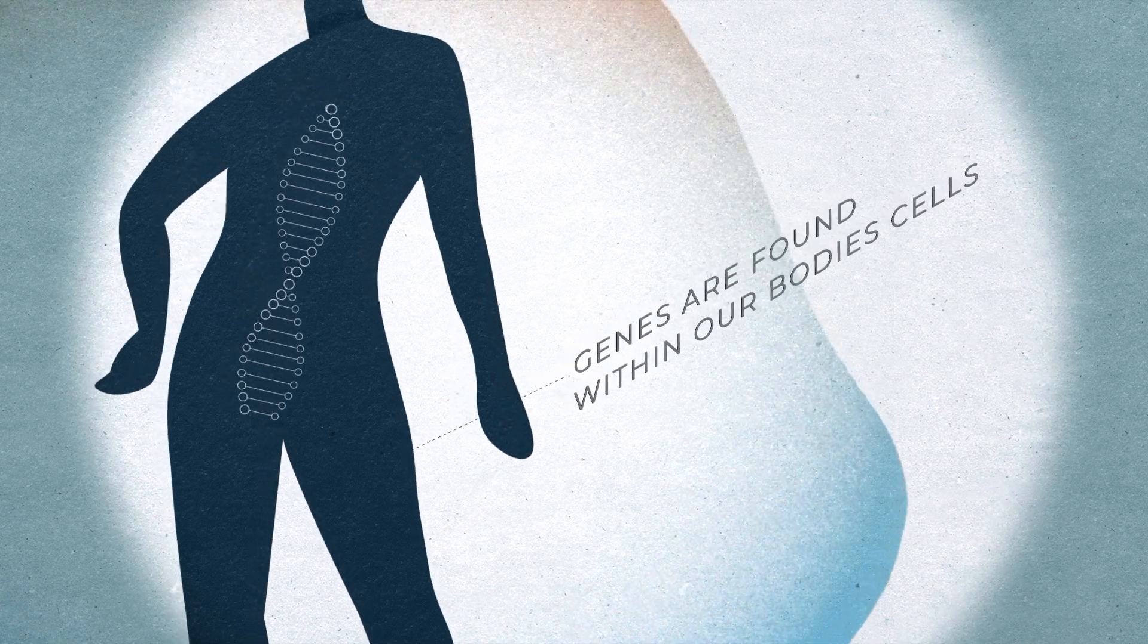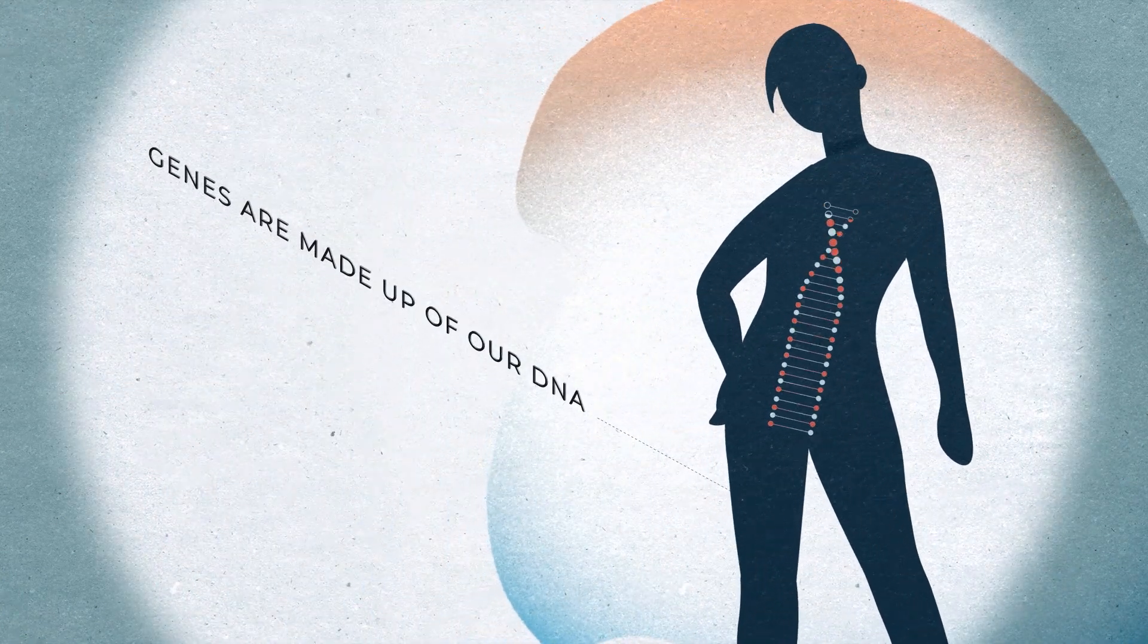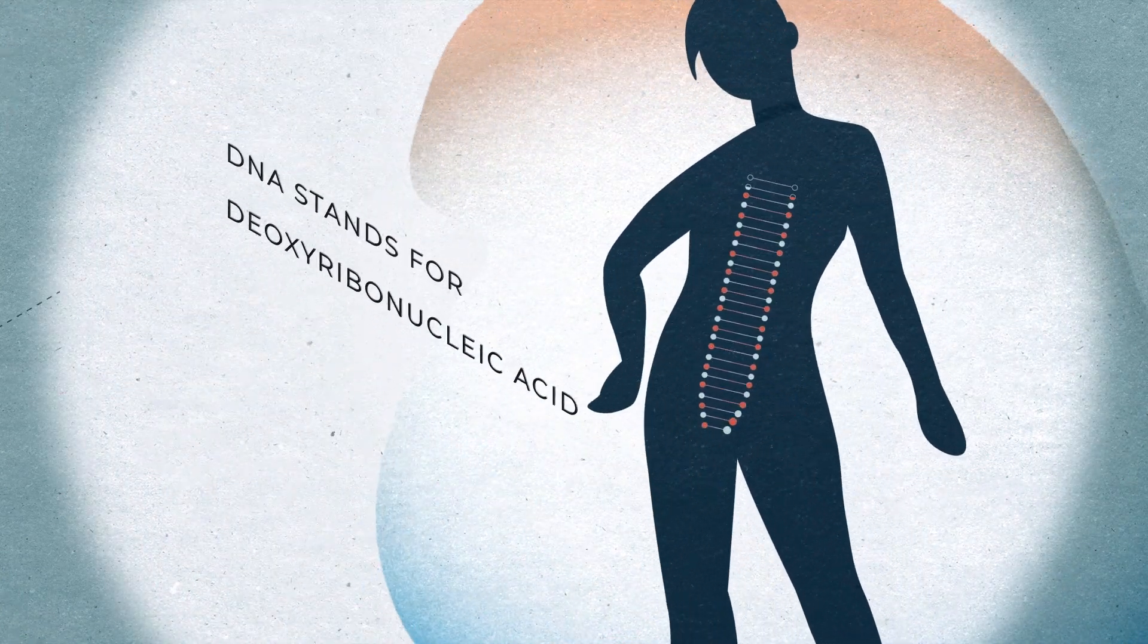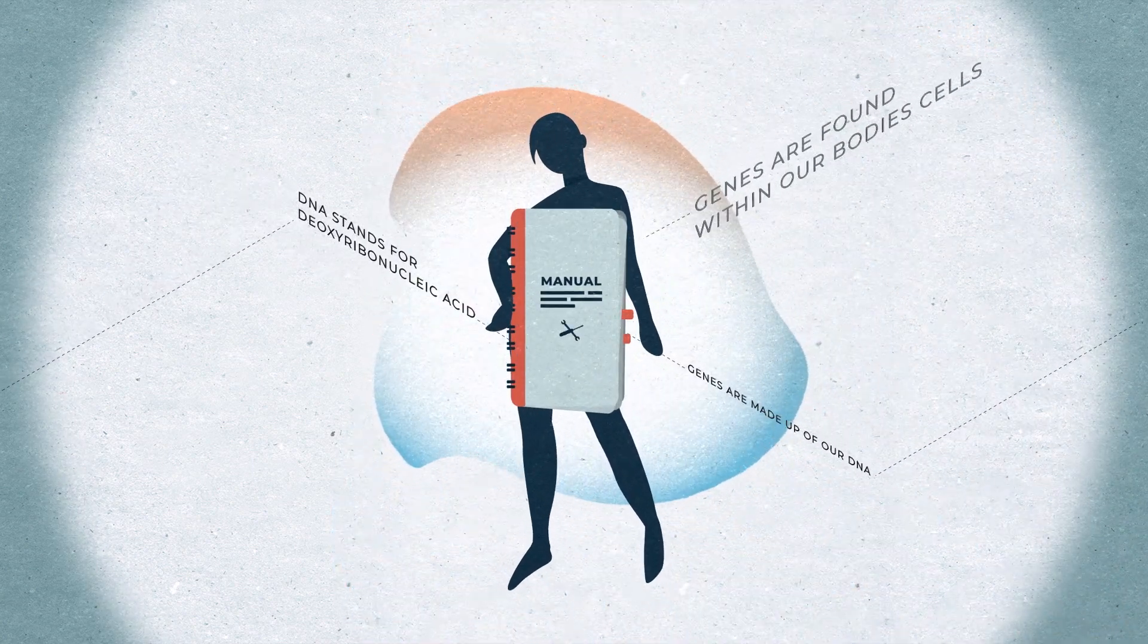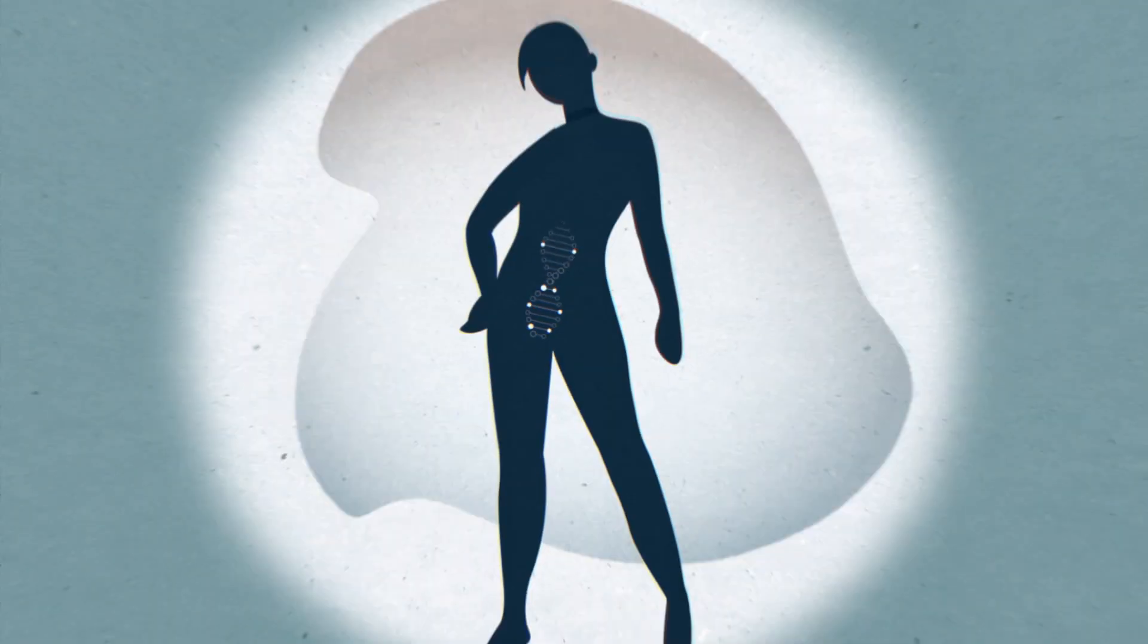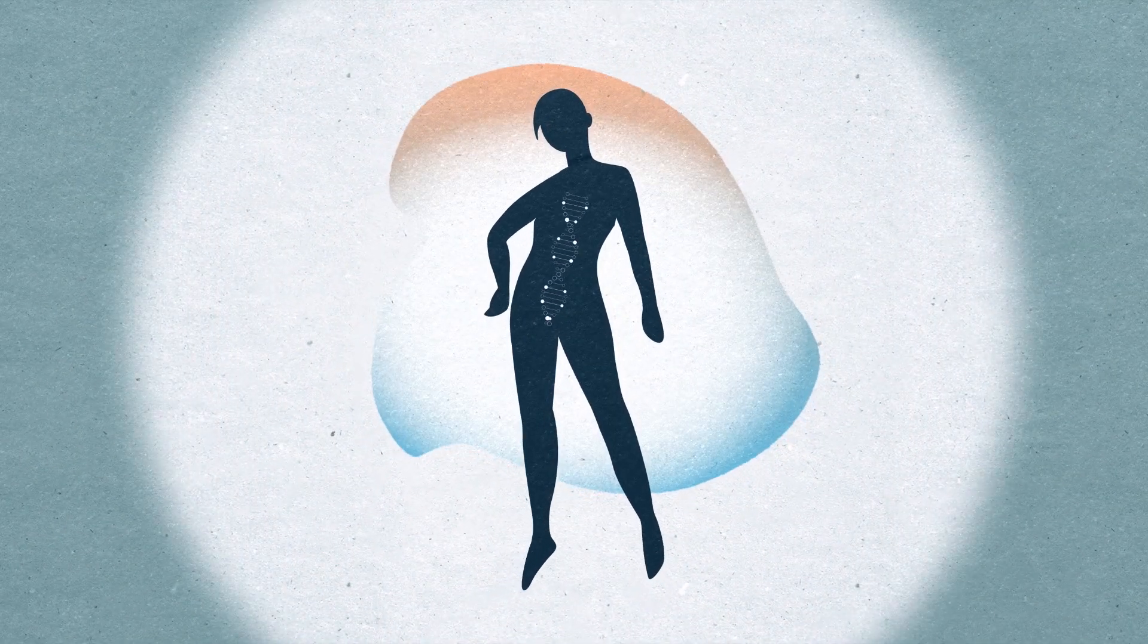Genes are found within our body's cells and they're made up of our DNA. DNA stands for deoxyribonucleic acid and it's kind of like our body's built-in manual. The DNA in our genes tells our body what our traits are.